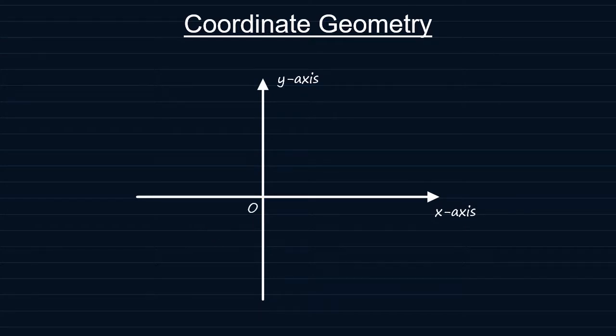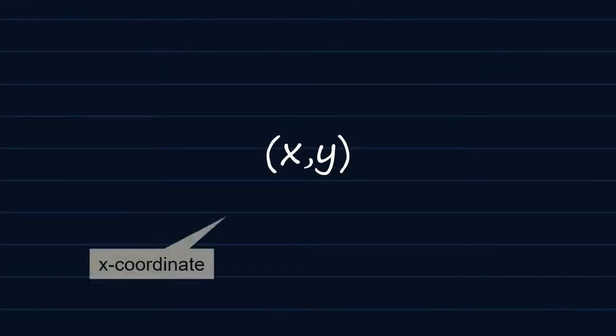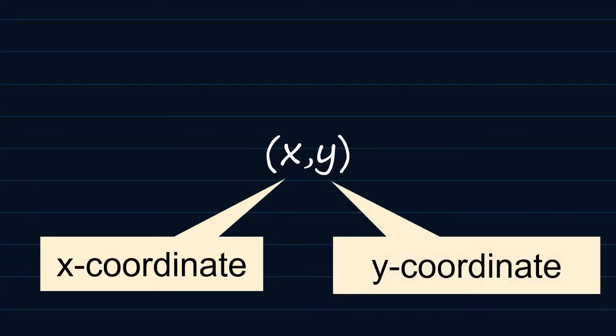We can use these axes to describe any point in the plane using an ordered pair of numbers in the form x, y. X being the x coordinate and y being the y coordinate. Note how the coordinates x and y are separated by a comma at the middle.